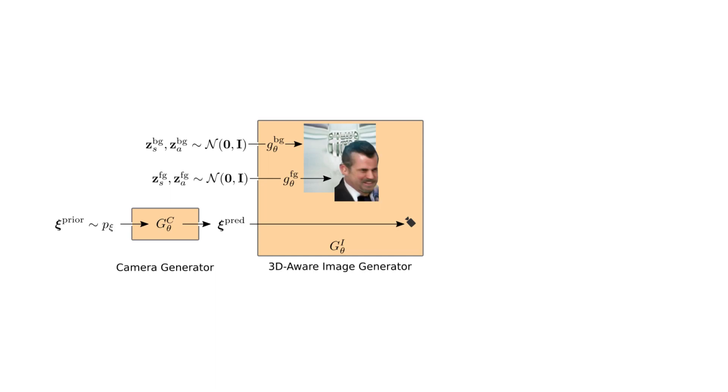The latent codes are provided to the foreground and background radiance fields and the predicted pose defines the camera viewpoint. For each pixel, we shoot a ray from the camera through the scene and evaluate the foreground and background radiance fields at sample locations.